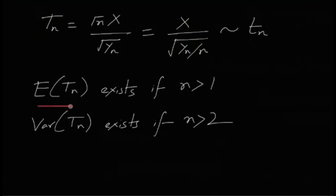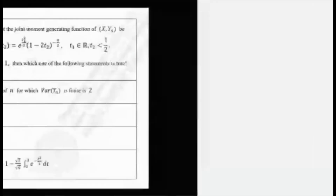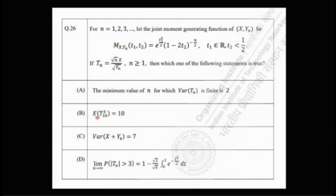We know that for a t-distribution with n degrees of freedom, the expectation exists only if n > 1 and the variance exists only if n > 2. Option A claims the minimum value of n for which the variance of Tn is finite is 2 — that is false; the minimum value is 3.